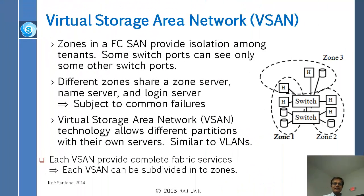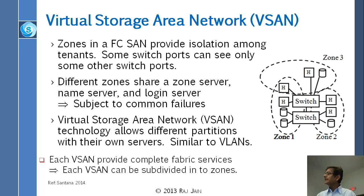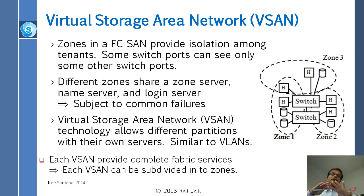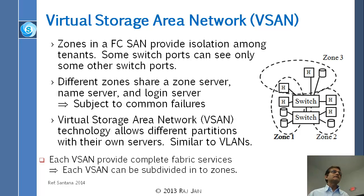Now we come to virtual storage area networks, vSANs, and NCI is a standard for it. There are two ways. The first is called zones. A zone is basically a way to divide things up — you can say these ports are zone 1, these ports are zone 2, these ports are zone 3, and some ports can be in both zones. There is no physical boundary, but there are administratively defined partitions — that is a zone.